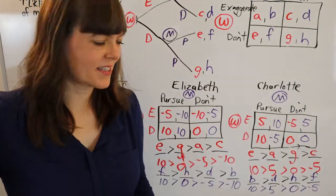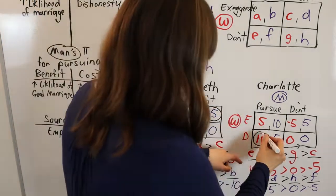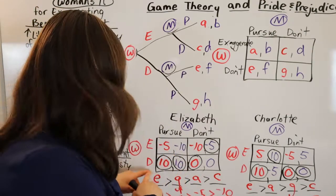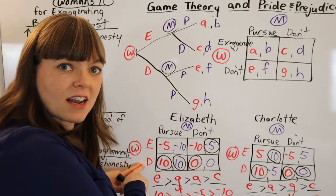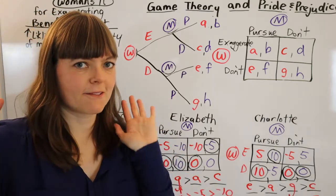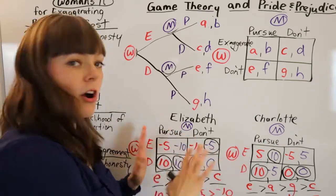And our next step is going to be to solve for Nash equilibrium. Our Nash equilibrium in Elizabeth's game, as I've set it up, has the woman not exaggerating her interest and the man pursuing. This is perfect. This fits with Elizabeth's vision of strategy. So we're good over here.